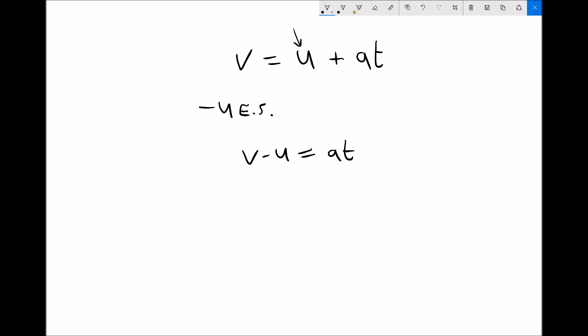Now we've got v minus u equals at. We want t on its own, so we need to divide each side of that equation by a, because what we've got at the moment is a times t and we just want t on its own.